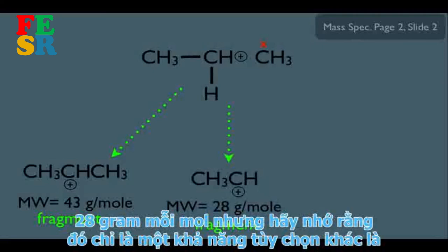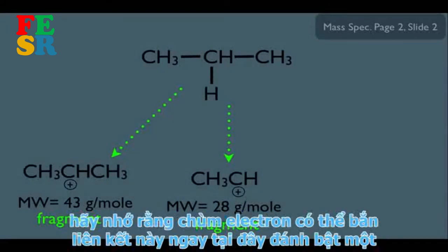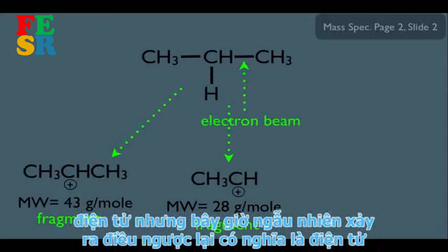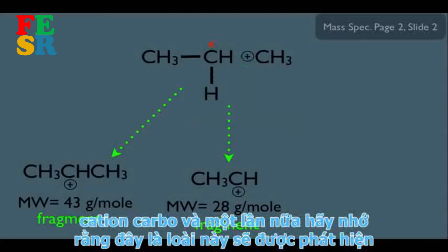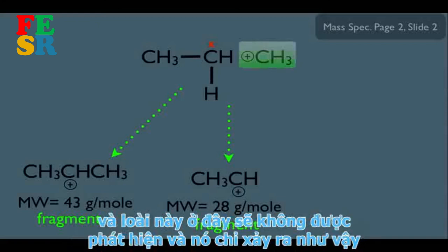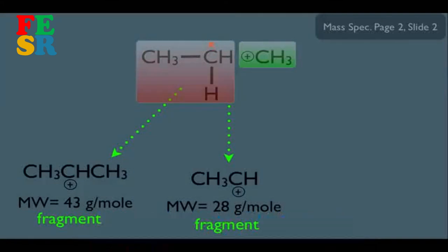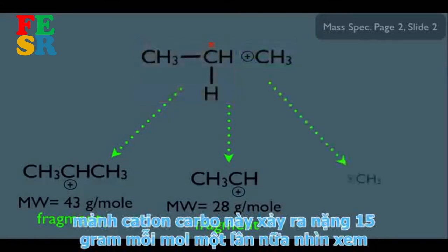Yet another possibility: the electron beam shoots the same C-C bond, but by random chance the electron jumps to the left carbon, making the right carbon the carbocation. This gives the opposite charged fragment. That carbocation fragment happens to weigh 15 g/mol — a methyl carbocation.